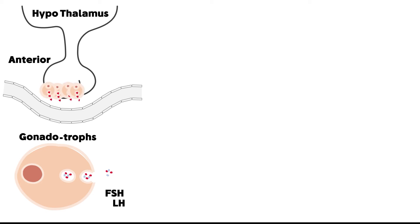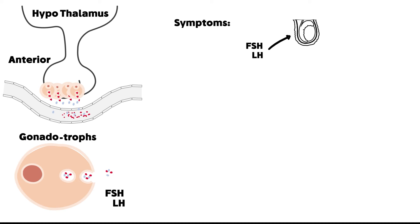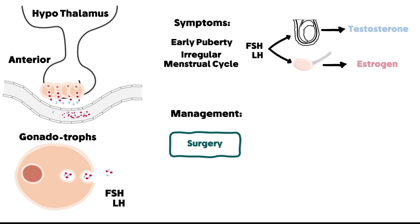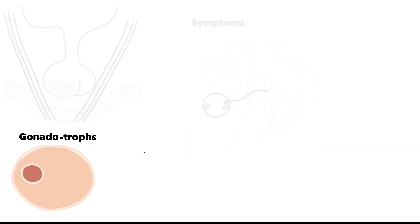The fifth type involves gonadotrophs, which secrete both FSH and LH. These hormones stimulate the gonads. Increased cell number and increased production of these hormones leads to overstimulation of the prostate gland, causing increased testosterone, and similarly overstimulation of ovaries causing increased estrogen. Symptoms include early puberty and irregular menstrual cycles. Management is surgery and radiotherapy.